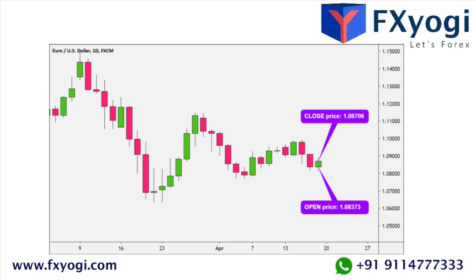As for the disadvantages of Heiken Ashi: any indicator based on slowing down signals is pretty much only useful when the price is trending. Since Heiken Ashi smooths the price, it can be prone to being late in identifying trend reversals, which means if you are in a trade you will end up with a late signal to close it.